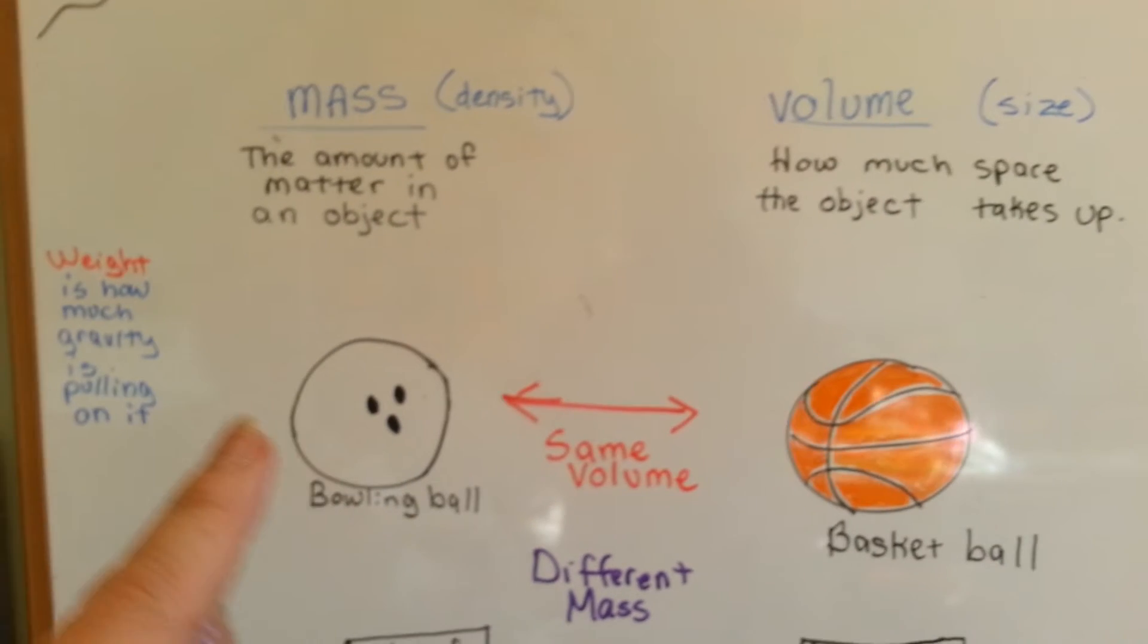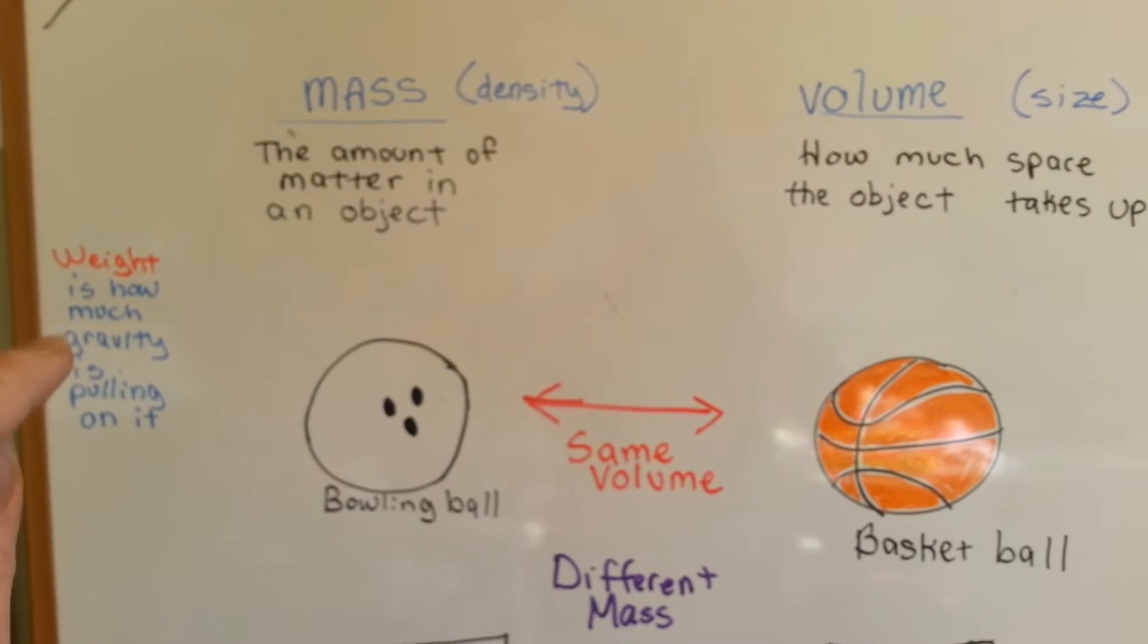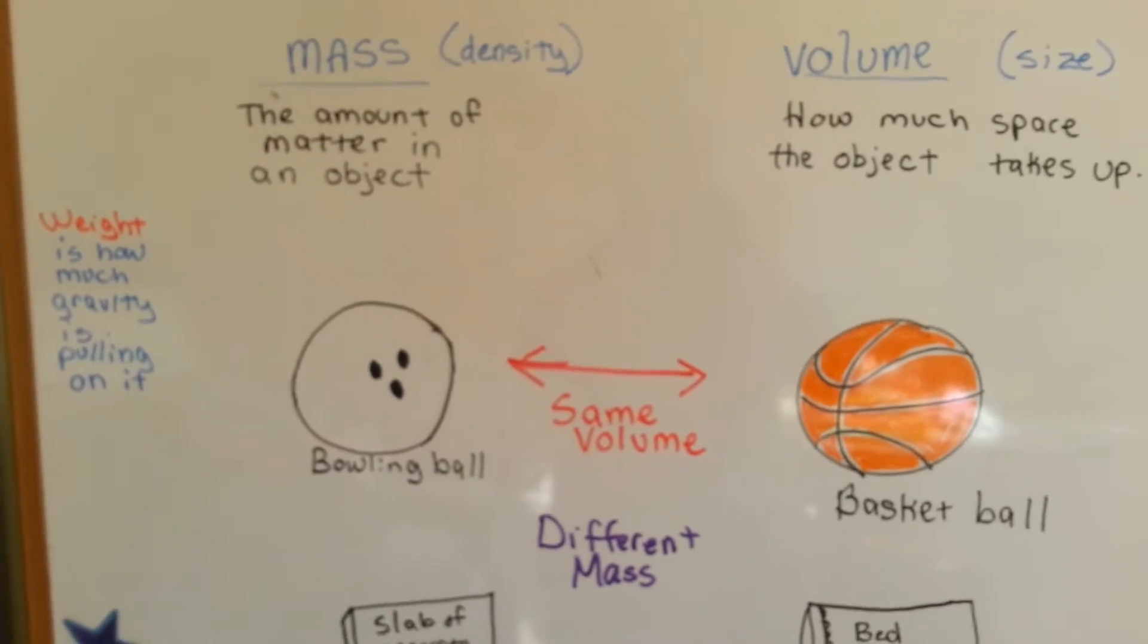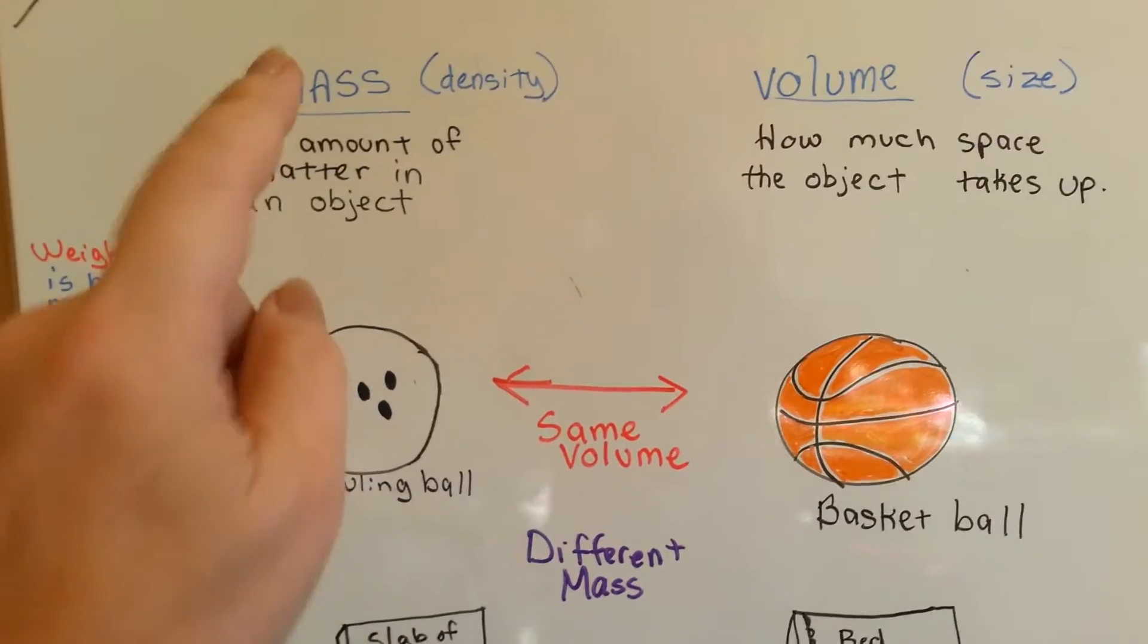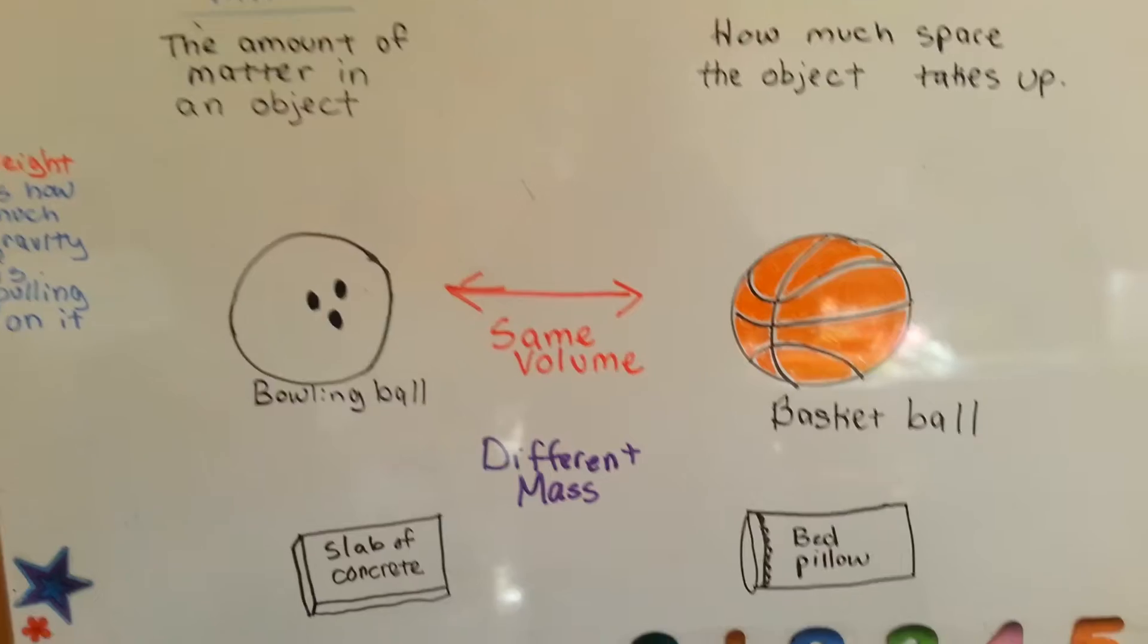So, it's not the weight. Weight is how much gravity is pulling on it to the Earth. Mass is different. Mass is how dense it is.